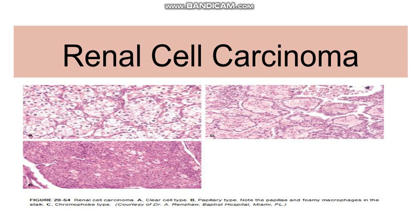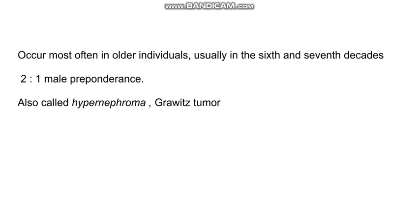Hello everyone. In this video we will discuss about renal cell carcinoma. Renal cell carcinoma is also known as hypernephroma or Grawitz's tumour and it mostly occurs in older individuals, usually between the 6th to 7th decade of life. Males are slightly more affected than females.